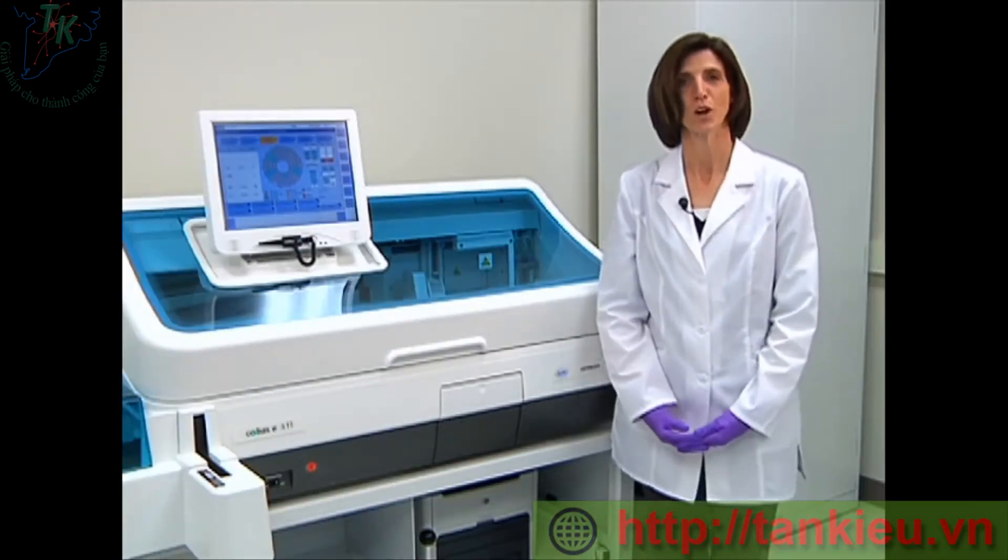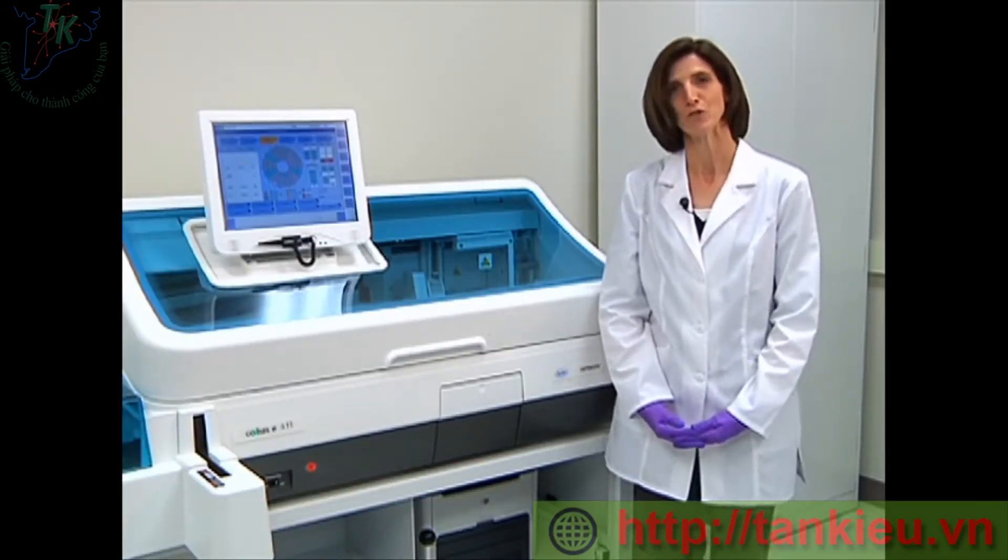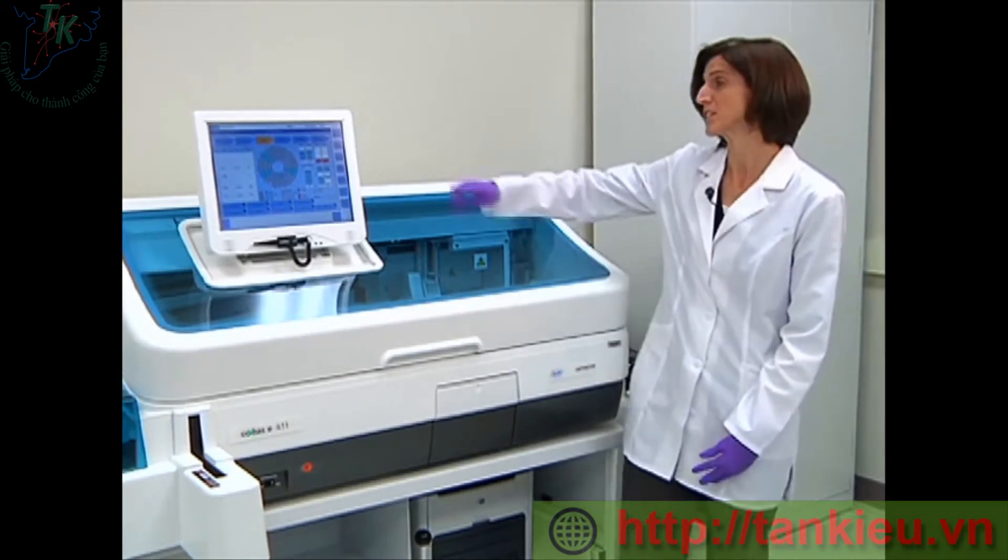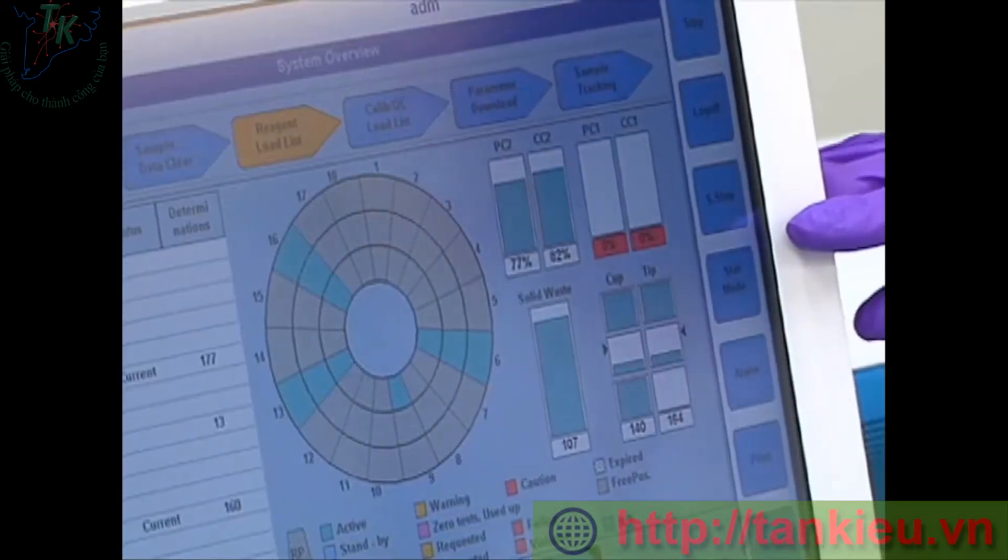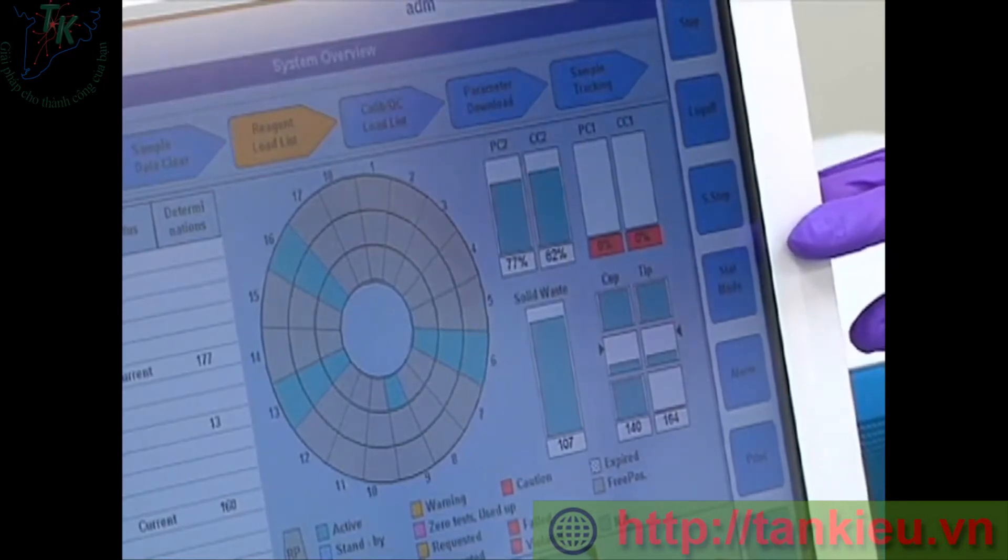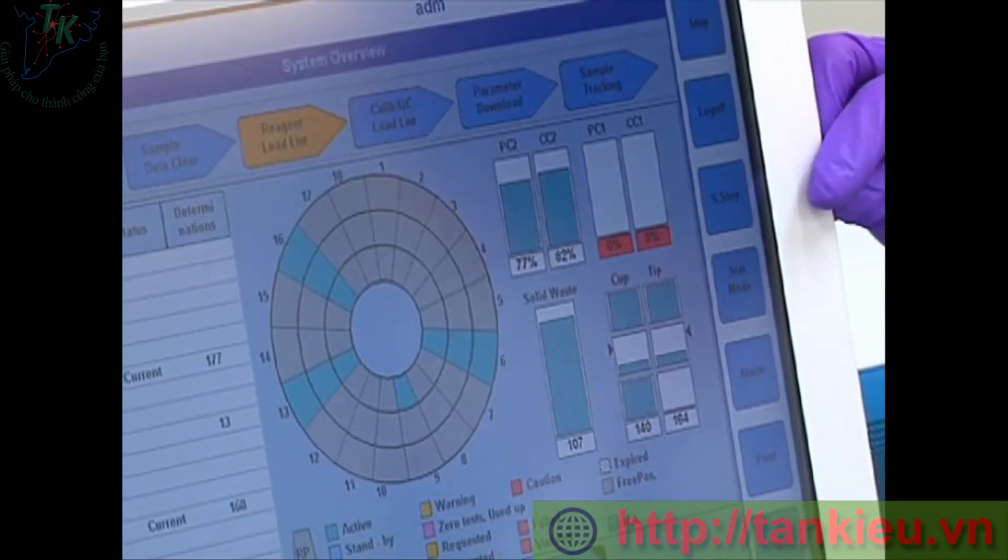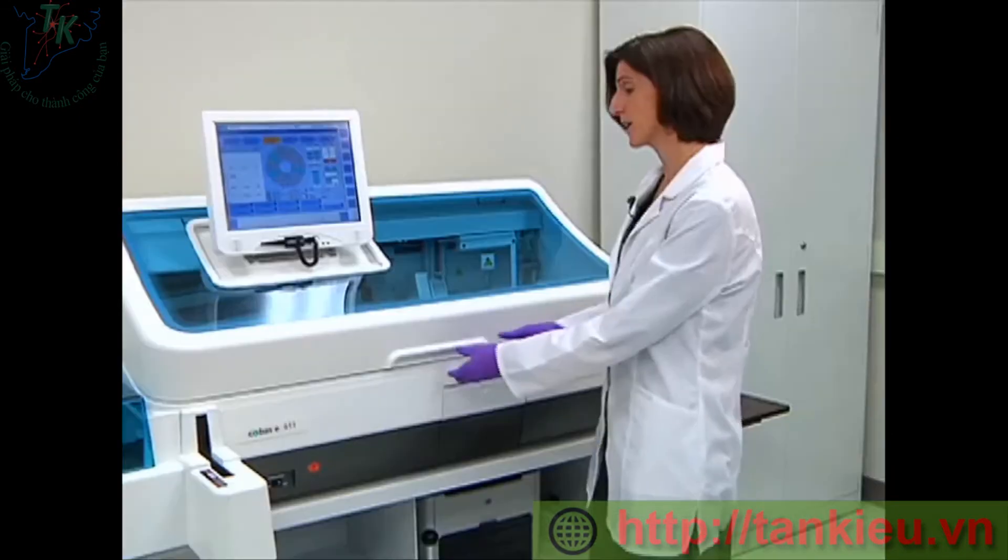So now we're ready to do our system reagent and hardware inventory checks, which is also known as your consumables. Again, the system overview screen will show us exactly what consumables are needed to be loaded. You're going to be able to see yellow or red on the screen to notify you of low volume. So we're going to open the cover.